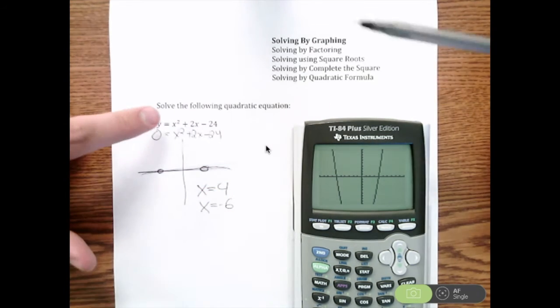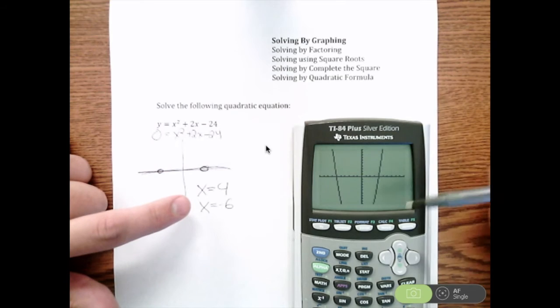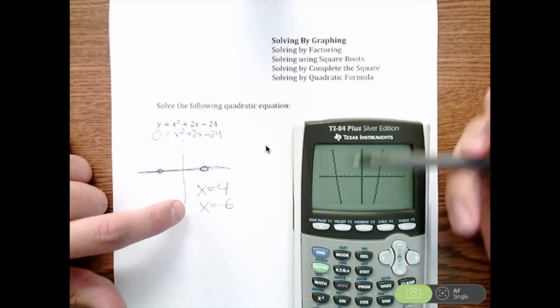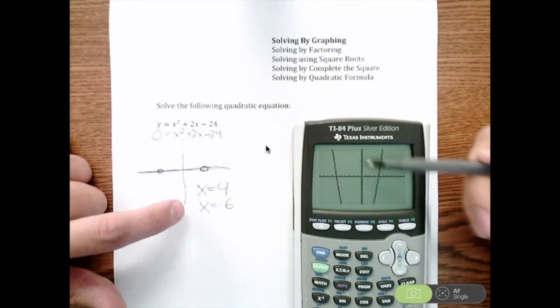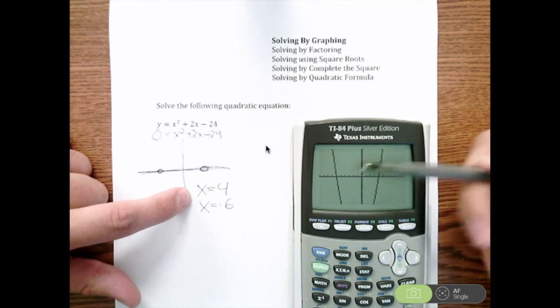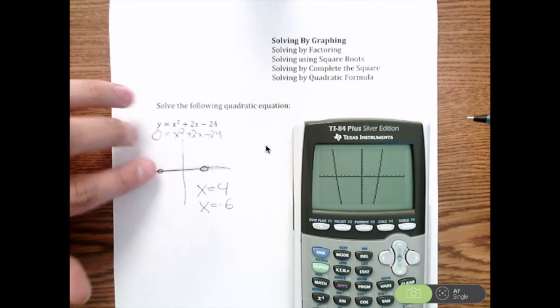Now what I mentioned earlier is why we want to use, sometimes we're okay with graphing, sometimes you're not, is sometimes our graph will actually go in between two points. So as of this point, we don't know how to find an exact value for that. So we only like it if it goes through one of our marks on our x axis. So this is solving by graphing.